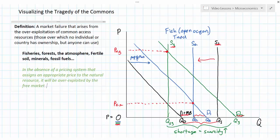So what we see here is that in the absence of a pricing system that assigns an appropriate price to the natural resource, it will be over-exploited by the free market. And this scenario could be played out in many different markets. It's not only fish in the open ocean. Any natural resources over which there is no clear ownership tend to be underpriced by the free market. The cost of extracting these natural resources is much lower to those that actually engage in its extraction than it is to society as a whole. We end up with the market failure arising from the overproduction and overconsumption of renewable or non-renewable natural resources.